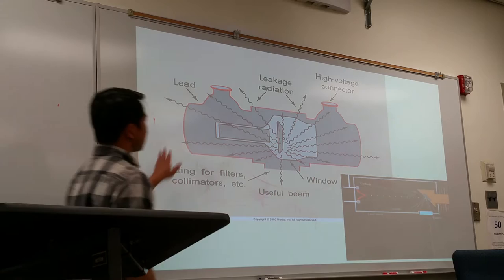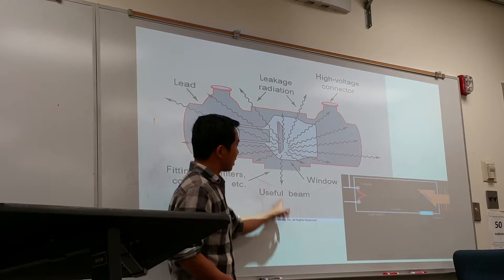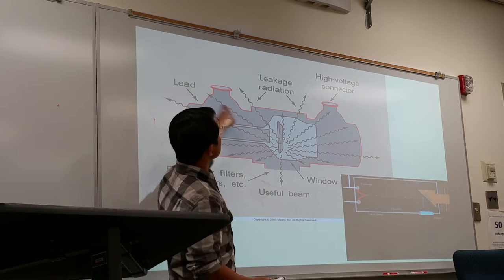Here is a diagram of the metal housing with the x-ray tube inside. The only point where the useful x-ray beam should come out is the port, where it interacts with the patient. Any place where x-rays are coming out beyond that port would be considered leakage radiation.